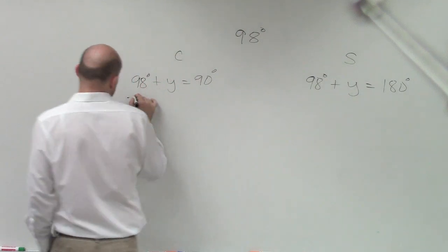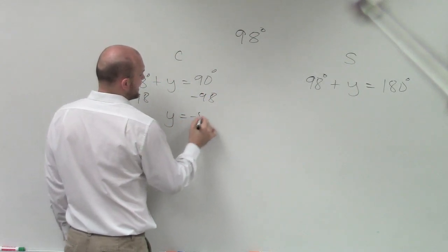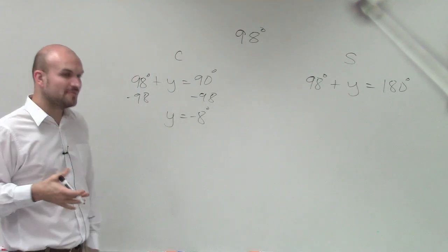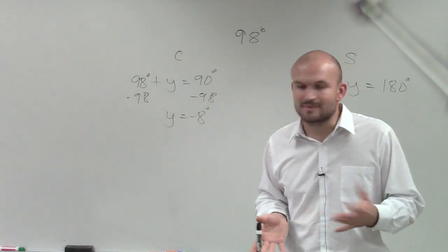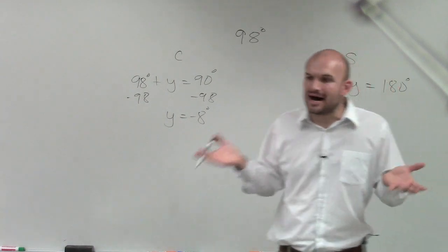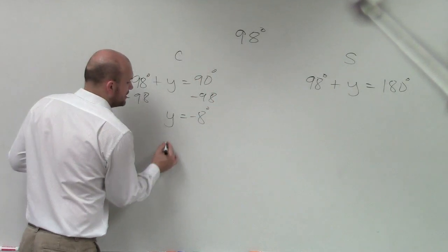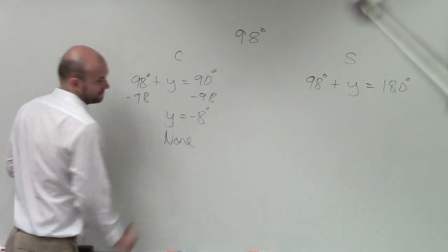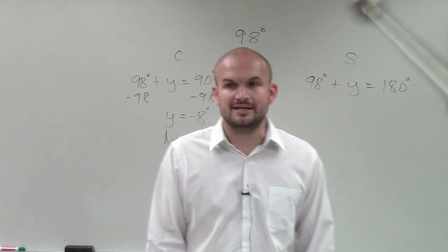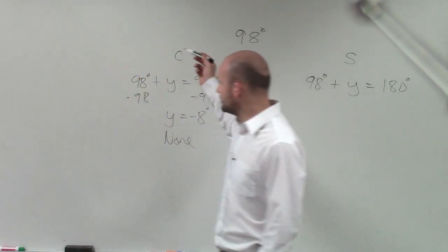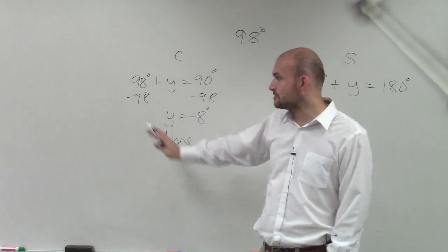So when I subtract 98 to solve for x, I get y equals negative 8 degrees. And for the complement, we cannot have negative numbers — it says what two positive numbers add up to give you 90 degrees. So since we're getting a negative number, it does not exist. There is no complement to 98 degrees, because 98 degrees is already above 90 degrees.